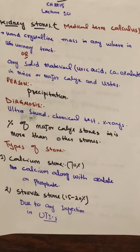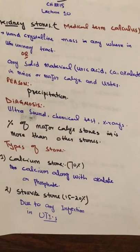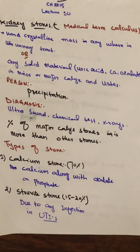Kidney stone is a hard crystalline mass anywhere in the urinary tract, for example in the ureter and kidneys. It is any solid material, for example uric acid, calcium oxalate, and the minor and major calyces of the kidney. These are stones.